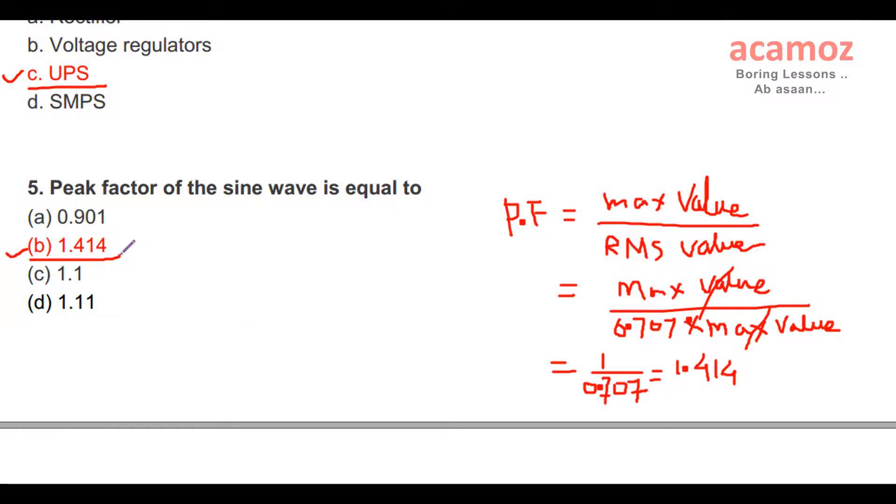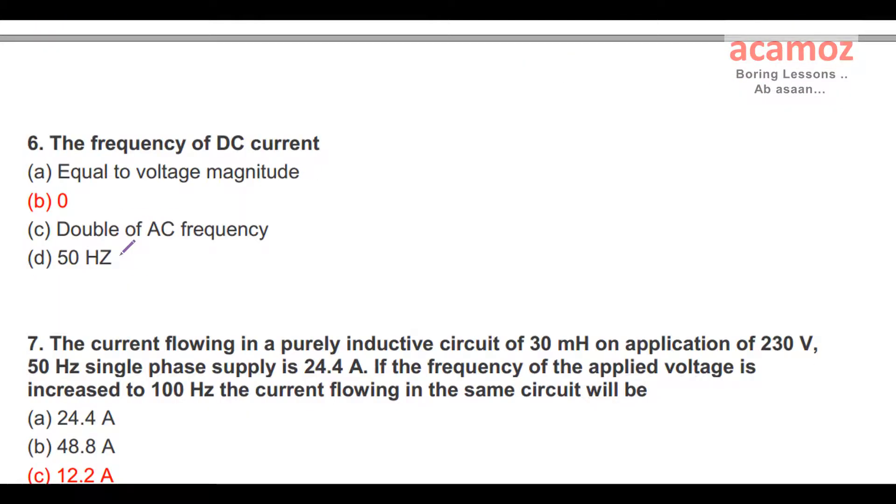Sixth question: The frequency of DC current. There is no cycle or magnitude changes in the DC circuit or DC current, so the frequency is zero. Frequency is zero is the answer.